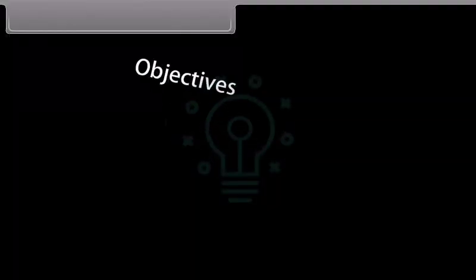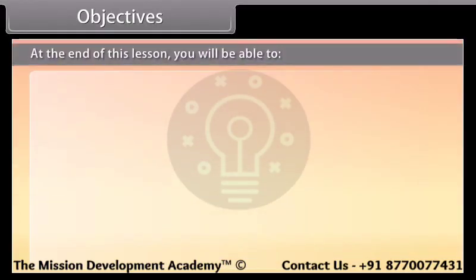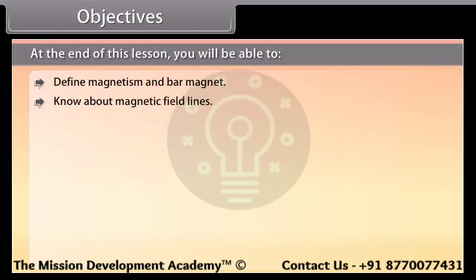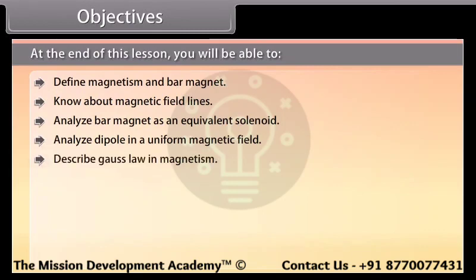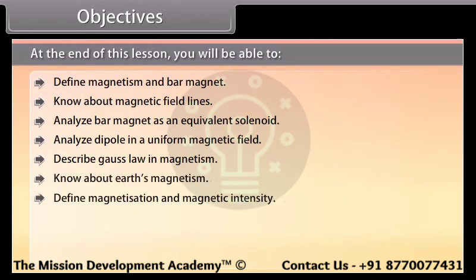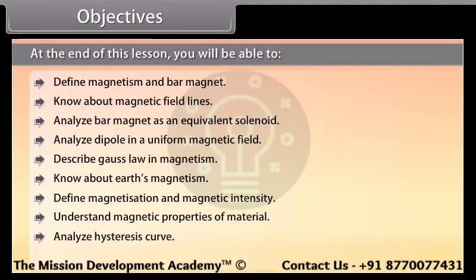Objectives: At the end of this lesson you will be able to define magnetism and bar magnet, know about magnetic field lines, analyze bar magnet as an equivalent solenoid, analyze dipole in a uniform magnetic field, describe Gauss's law in magnetism, know about Earth's magnetism, define magnetization and magnetic intensity, understand magnetic properties of material, analyze hysteresis curve, and describe permanent magnets and electromagnets.